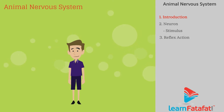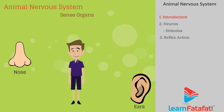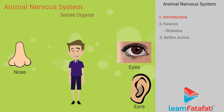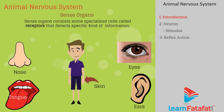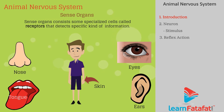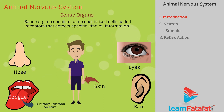To identify the situation, organisms have sense organs such as the nose, ear, eyes, tongue, and skin. Sense organs consist of specialized cells called receptors that detect specific kinds of information. For example, the tongue has gustatory receptors that detect taste, and the nose has olfactory receptors that detect smell.